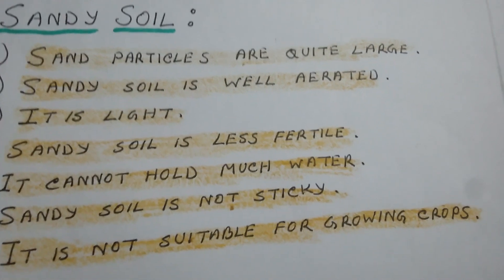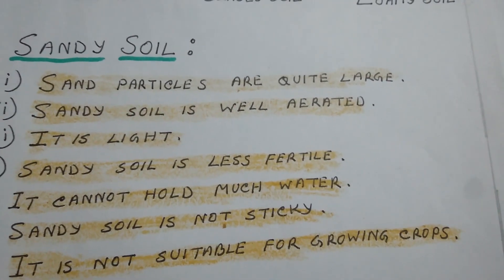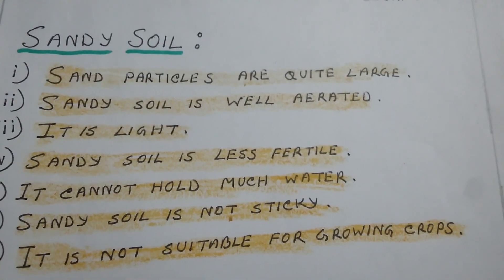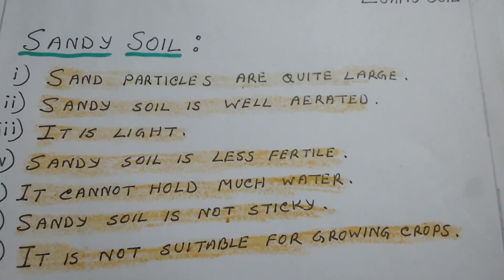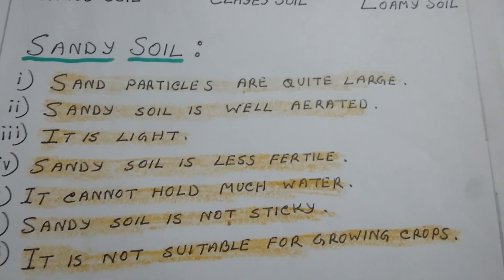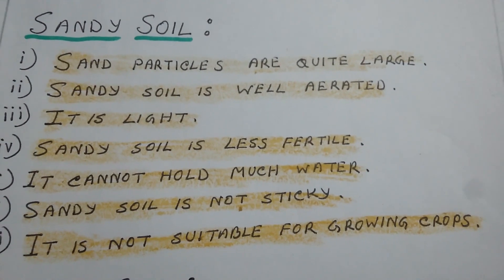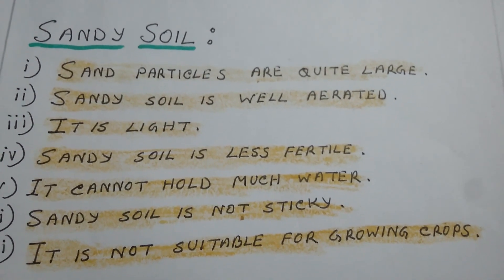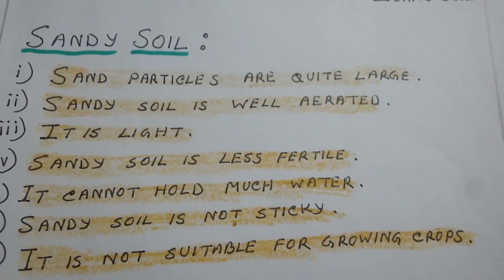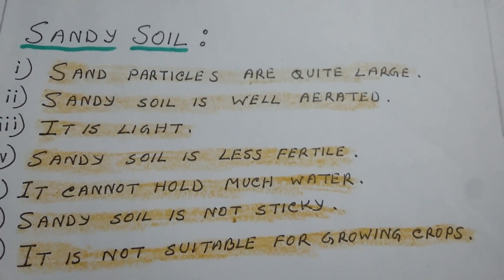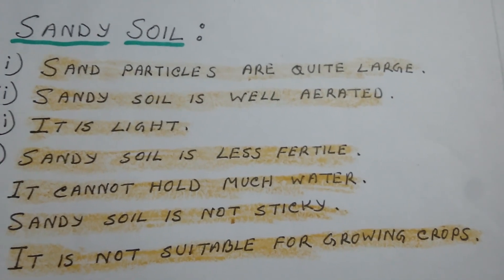Sandy soil contains a large amount of sand and very small amounts of silt and clay particles. Sand particles are quite large and cannot fit closely together, so there are large spaces between them. These spaces are filled with air, so sandy soil is well aerated.